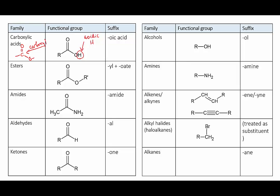When you name a carboxylic acid you add '-oic acid' onto the name. For instance, if you put a carboxylic acid group onto ethane, that would become ethanoic acid. In an amide, the alcohol of the carboxylic acid is replaced by an amine group, and to name this you add '-amide' to the name. So in this case, ethane with an amide group on would be called ethanamide.